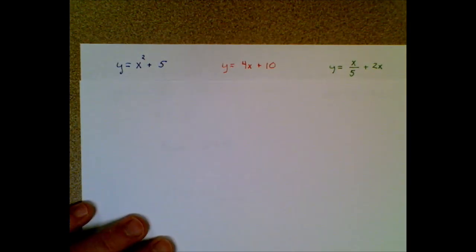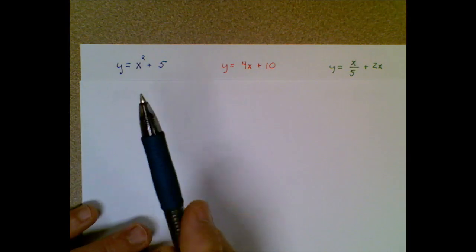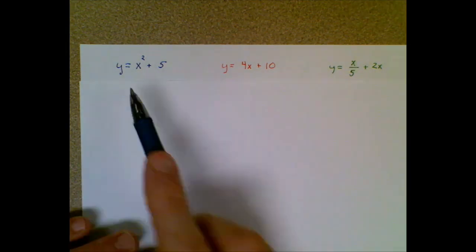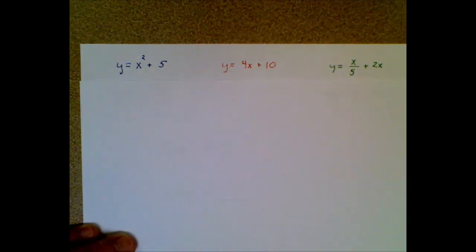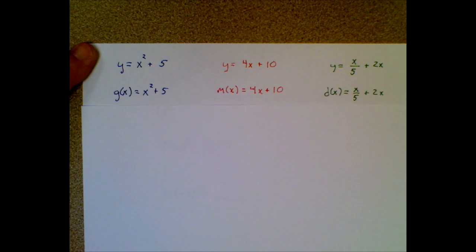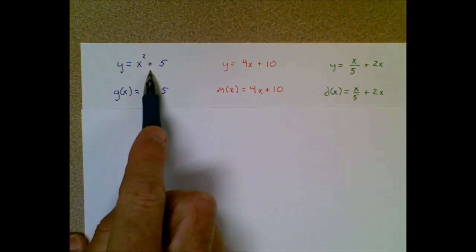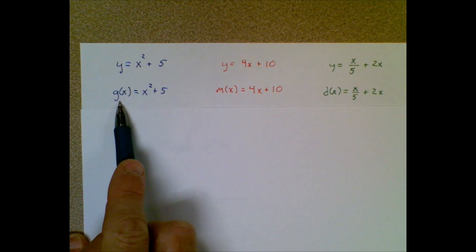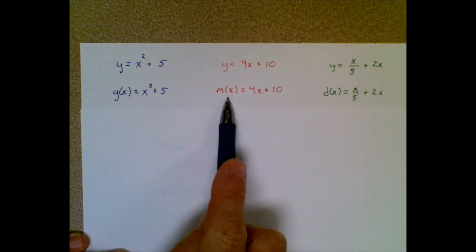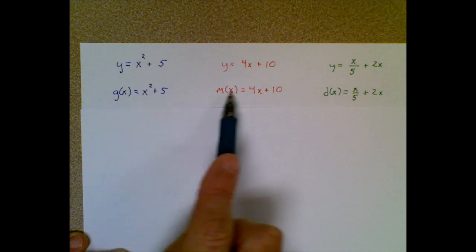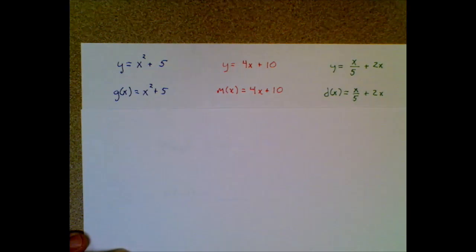This next example can show you why this new notation could be useful. Here I have three different equations, but they all have y equals, which is what we're used to. But you can give each equation its own symbolism. So we're now going to call this equation function g or g of x. This one now has m of x. This one now has d of x. So they don't all have y. They have their own particular name or symbolism.